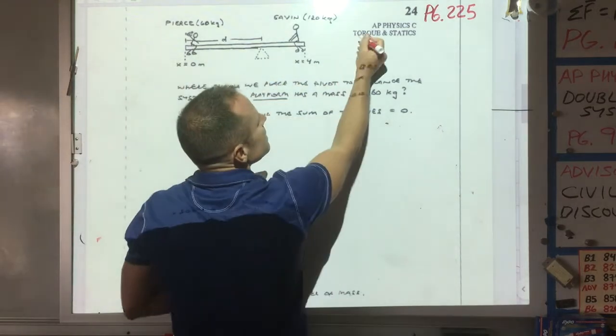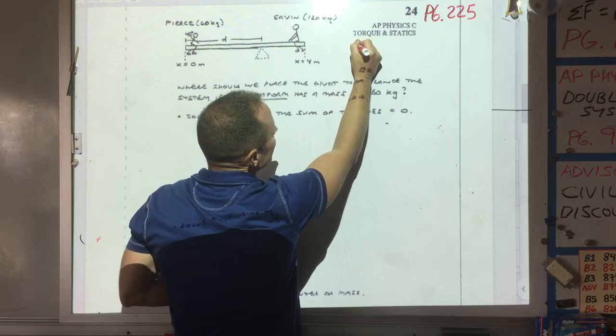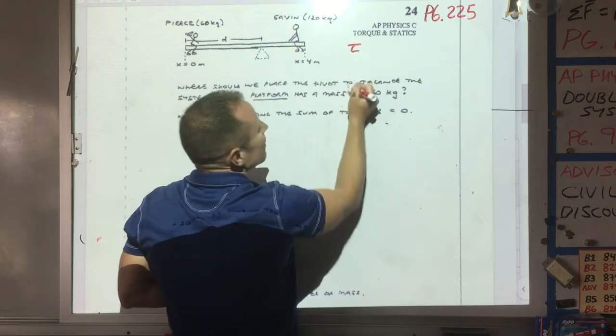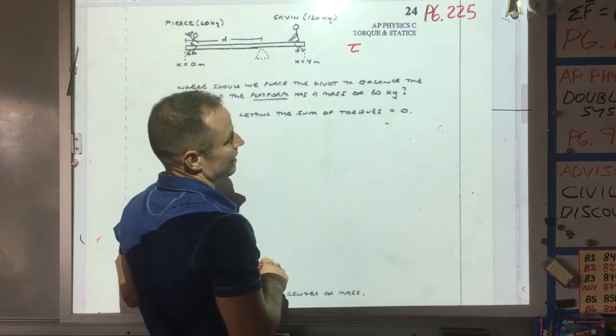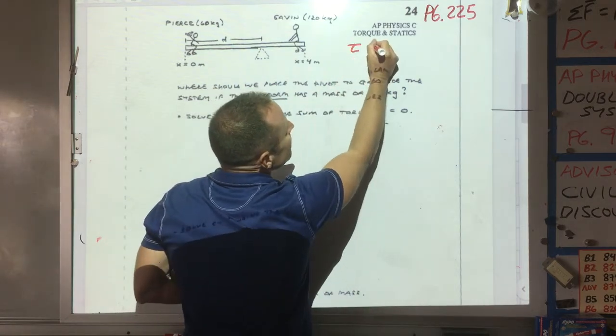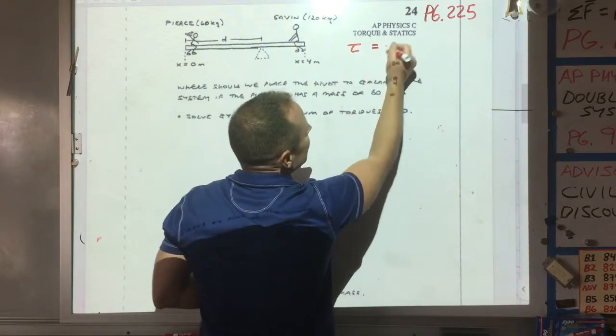So we're going to introduce this idea, this concept that's called torque. The symbol for torque, it kind of looks like a Greek letter tau, like a backwards capital J. We'll make more refined definitions of torque later.